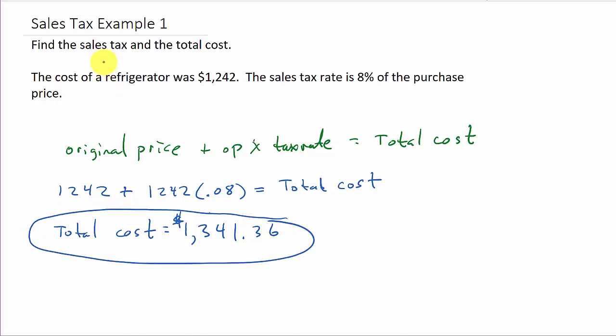They also wanted the sales tax. There's two ways you could do the sales tax: you could do this minus this, or you can just do the original price times the tax rate.